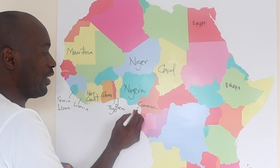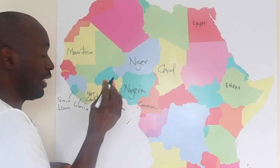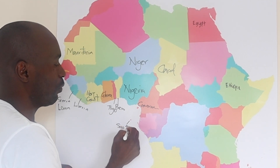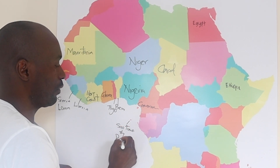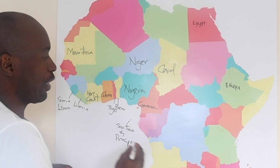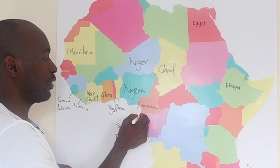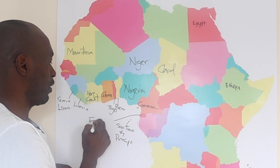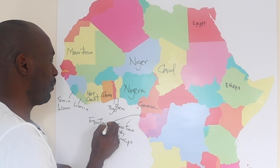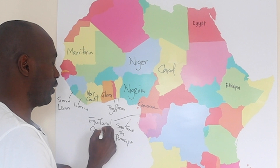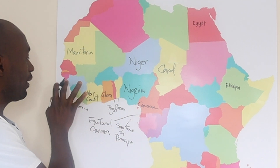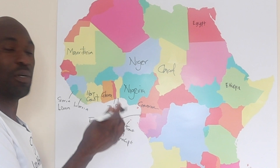And down here I have this tiny island of Sao Tome and Principe. And then here is Equatorial Guinea. And actually there are some Guineas here — Guinea is really very common in Africa.